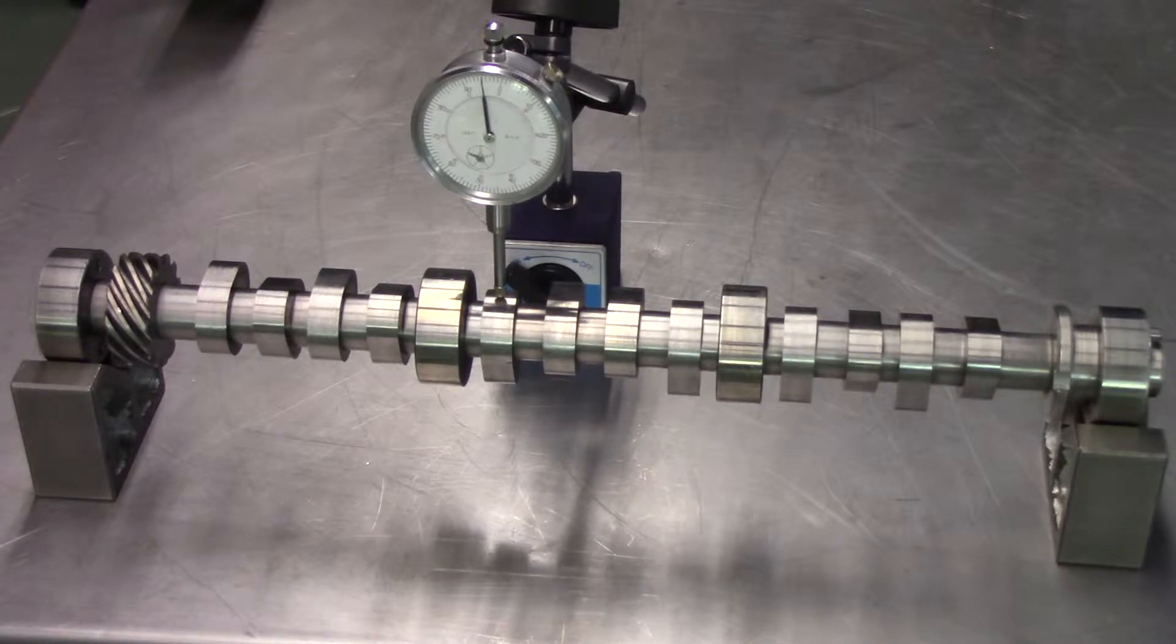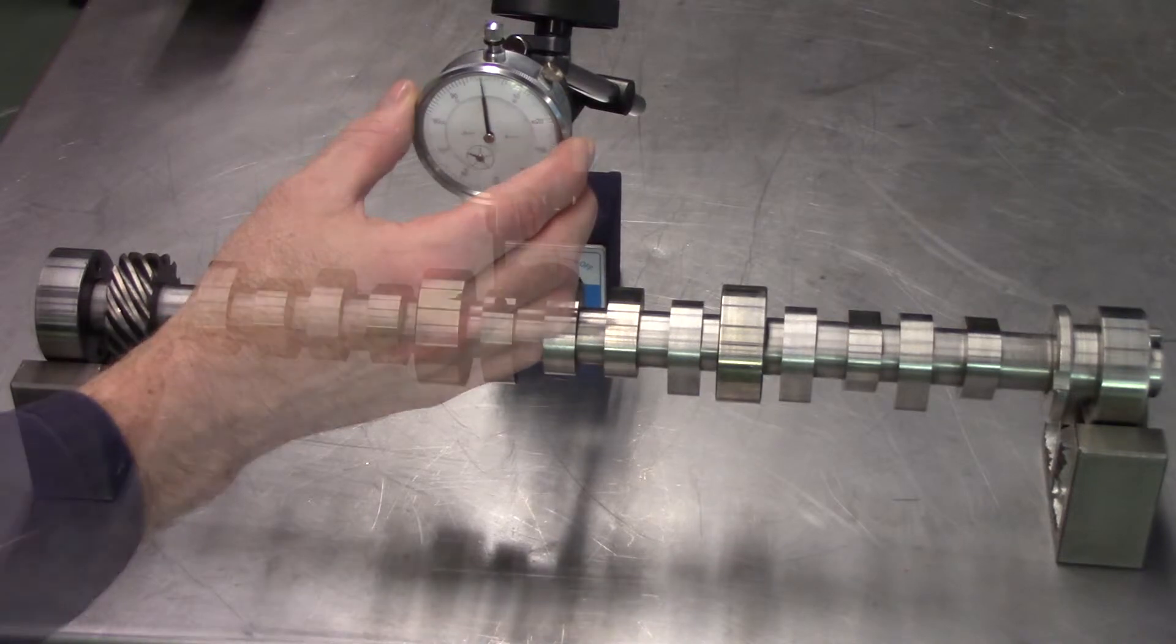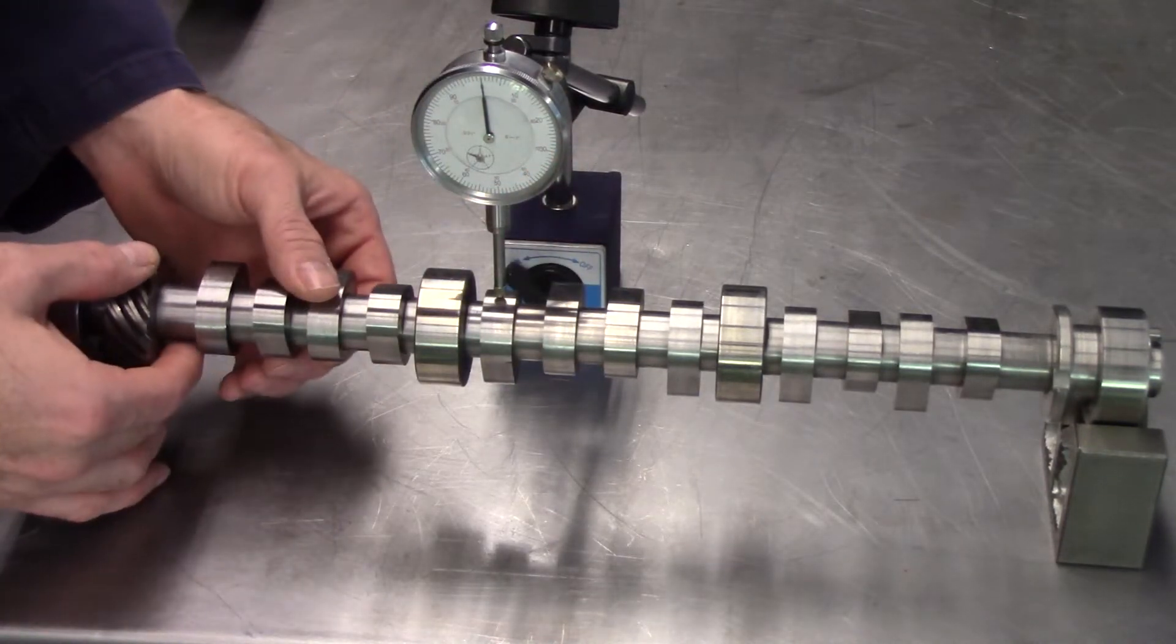Set up the dial indicator so that the plunger contacts the cam perpendicular to the surface of the lobe. Carefully zero the needle and then proceed to rotate the camshaft one full revolution while observing the gauge.